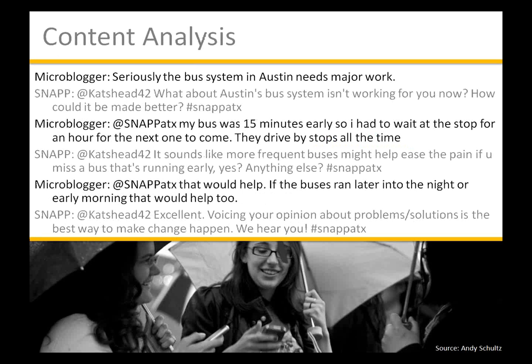In the Cat's Head 42 example, the microblogger initiated a conversation by saying 'Seriously, the bus system in Austin needs major work.' SNAP responded: 'What about Austin's bus system isn't working for you now? How could it be made better?' The user replied: 'My bus was 15 minutes early, so I had to wait at the stop for an hour for the next one.' SNAP suggested more frequent buses might help. The user agreed and added that buses running later into the night or early in the morning would also help. SNAP closed with: 'Voicing your opinion about problems and solutions is the best way to make change happen. We hear you.'